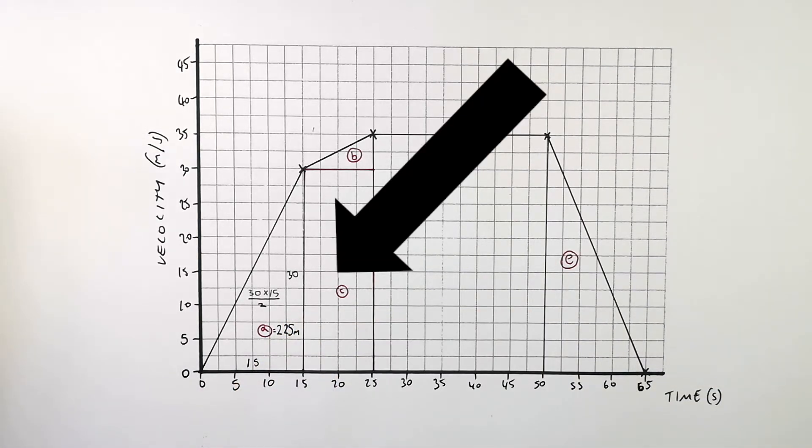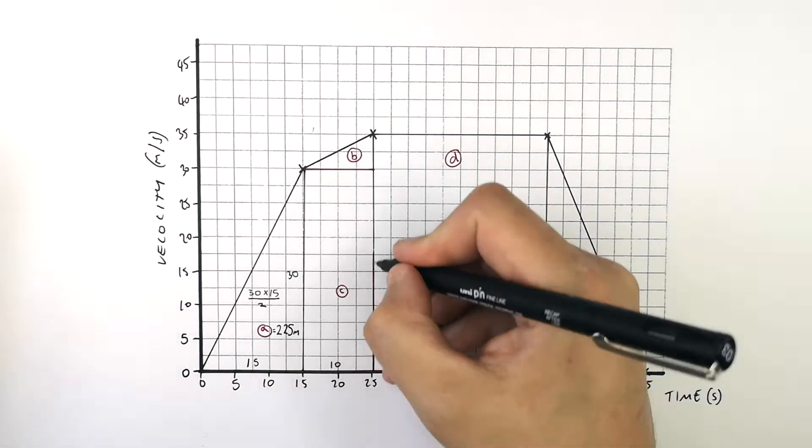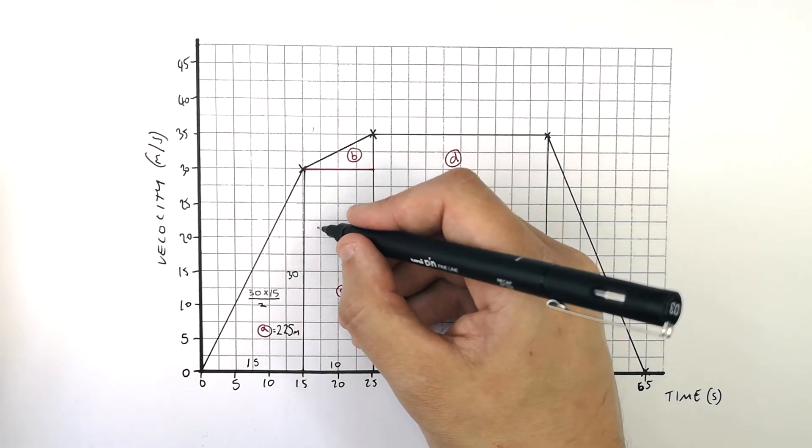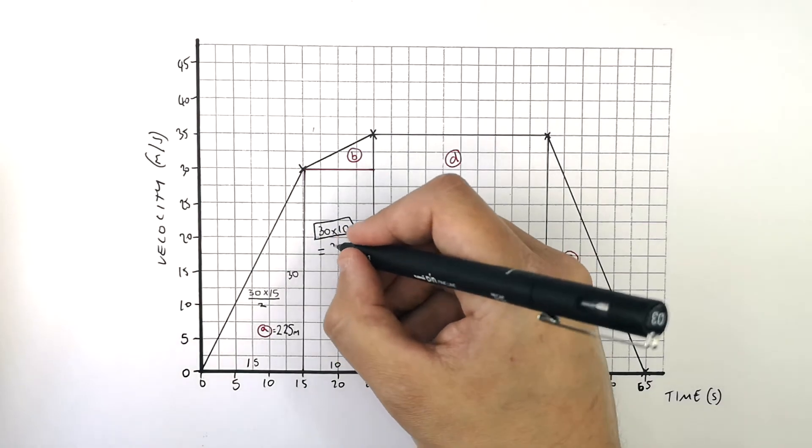This part of the graph was separated into a rectangle and a triangle so you must calculate the area of the rectangle and the triangle separately. So the base of the rectangle is 10 and the height of the rectangle is 30. To work out the area of a rectangle it's base times height so it's 30 times 10 which gives you an answer of 300 metres.